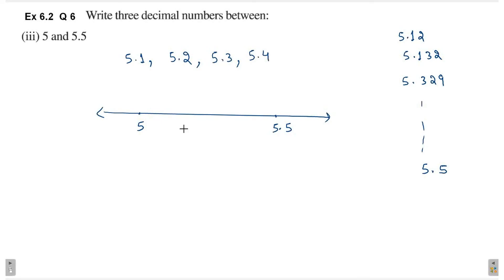These questions do not have one specific answer, because between the given two numbers, we can write any three decimal numbers. Between the given two numbers, we can write infinite number of decimal numbers.